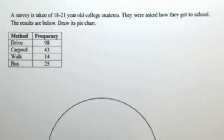Surveys taken of 18 and 20 year old college students. They were asked how they get to school. The results are below. Draw its pie chart.